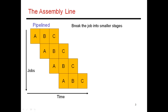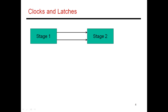The last video covered the basics of pipelining — how you can take one large monolithic task and break it up into three stages. I also ended that discussion by saying that pipelining does introduce certain overheads, and that's what I'm going to cover in this video. It essentially boils down to understanding the role of clocks and latches in a microprocessor pipeline.